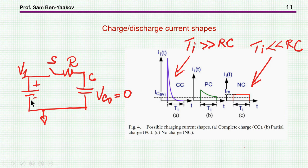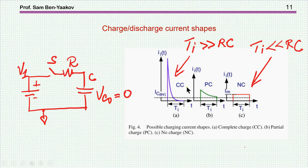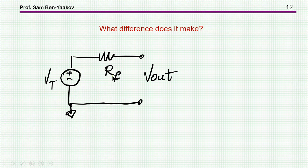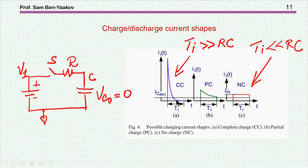It is important to realize that charging and discharging of a capacitor can take one of three forms. If the duration of the on time is long, then charging comes to completion. If the duration is very short, we will see almost a constant current — we call it no charge. And of course, there is an in-between situation in which the charging or discharging is not completed and terminates at a given point. This is the basic of charging and discharging of a capacitor, and it is important because it affects the internal resistance of this circuit.